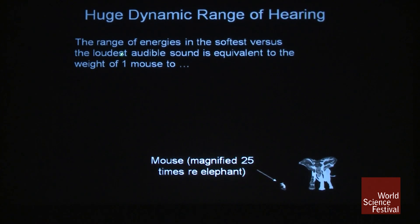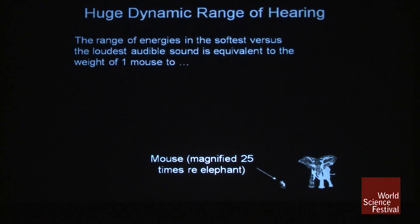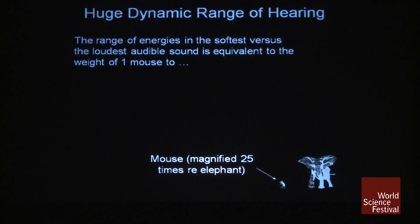Let's represent the range of energies in the softest versus the loudest sound that we can usefully encode, and make that equivalent to the weight of one mouse to something else. So the quietest sound — if the energy in the quietest sound is equal to the weight of one mouse, what is it that corresponds to the loudest sound that we can hear?